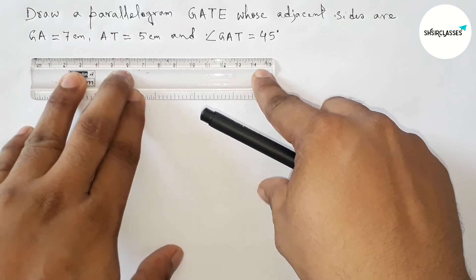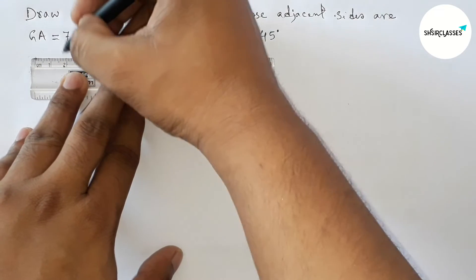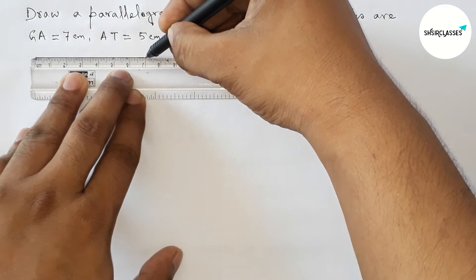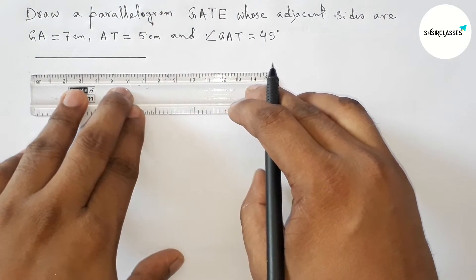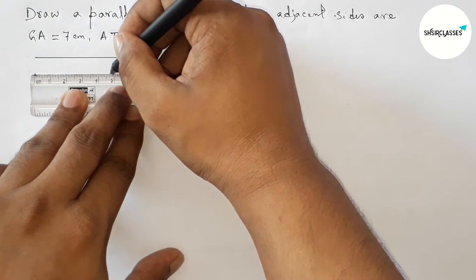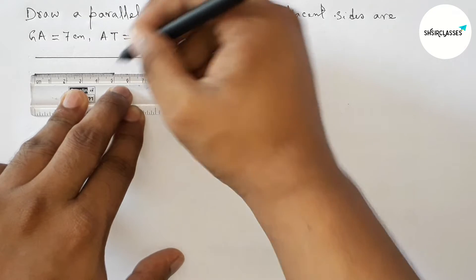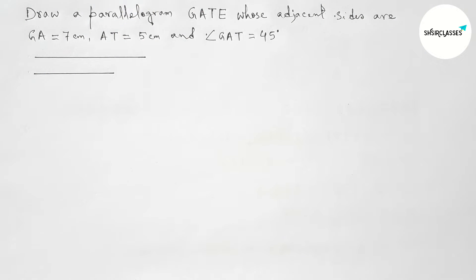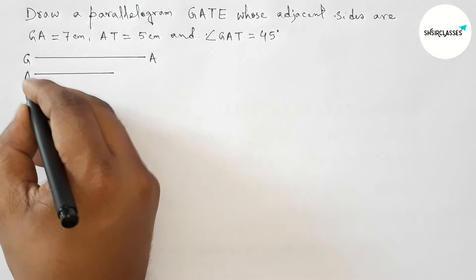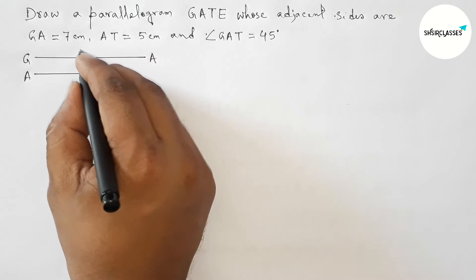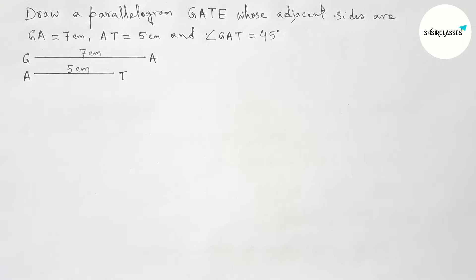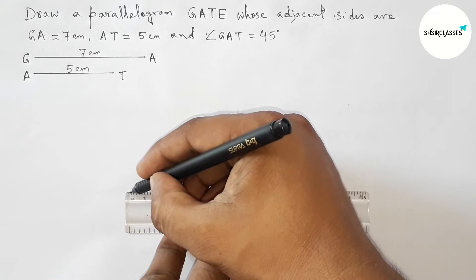First of all, drawing here the given two adjacent sides. Drawing a line segment of length 7 centimeter — this is the 7 centimeter line segment. Then drawing another line segment of length 5 centimeter — this is the 5 centimeter line segment. So this one is GA and this is AT, 7 centimeter and 5 centimeter.